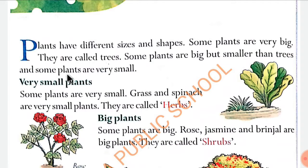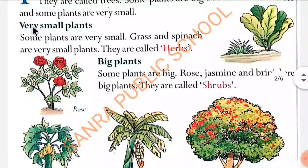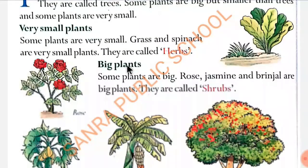Some plants are very small, kuch plants bhoot chhoate hote hai. Very small plants jaise grass aur spinach are very small plants. They are called herbs — inko herbs bolha jata hai.